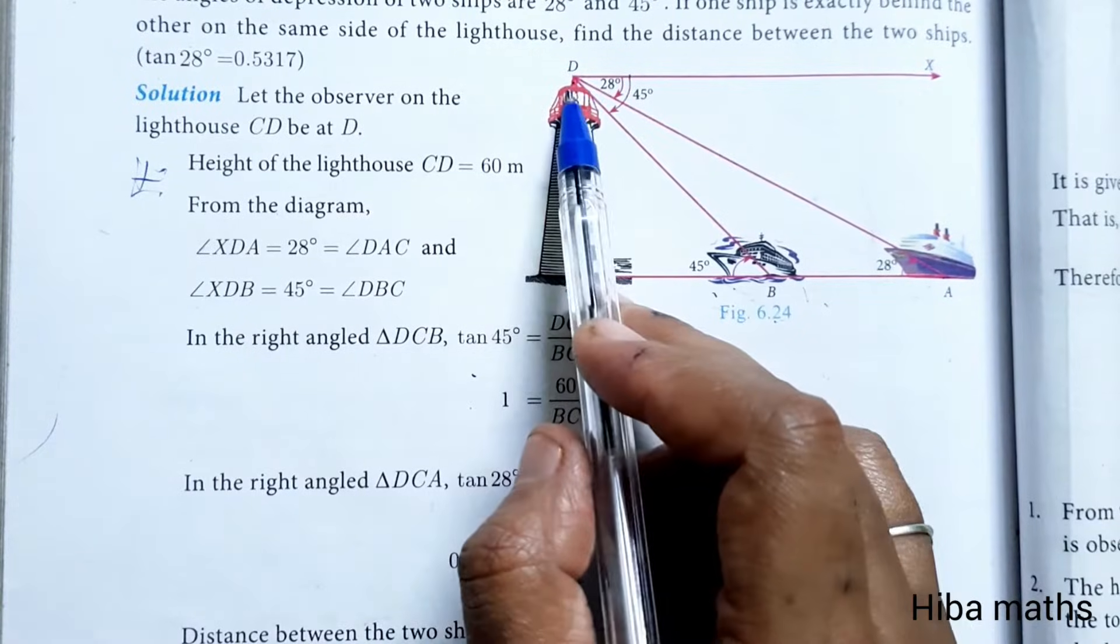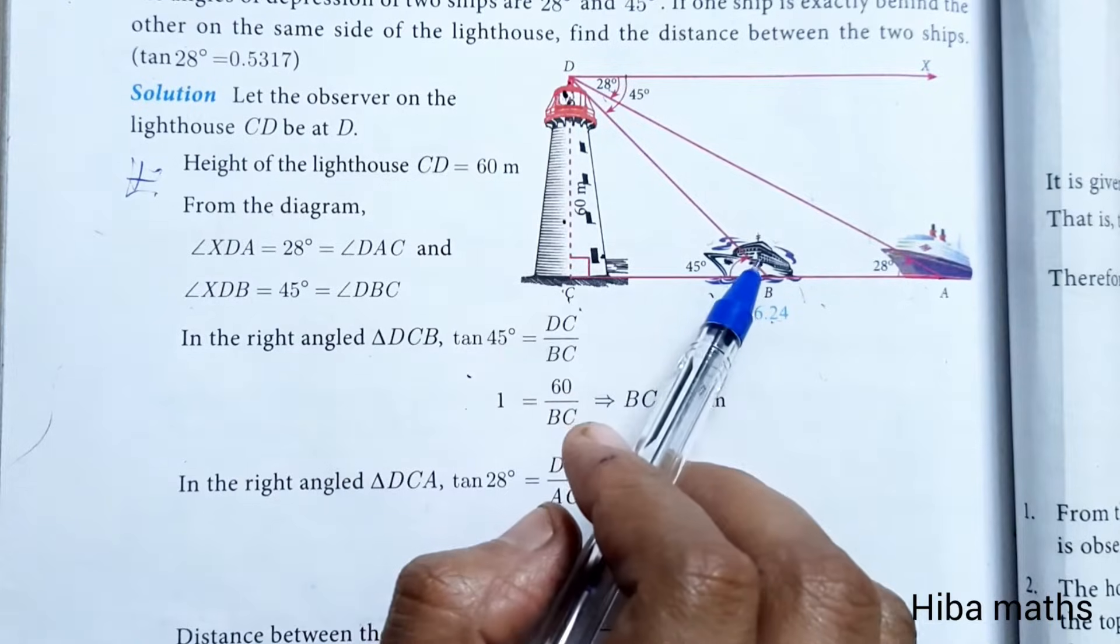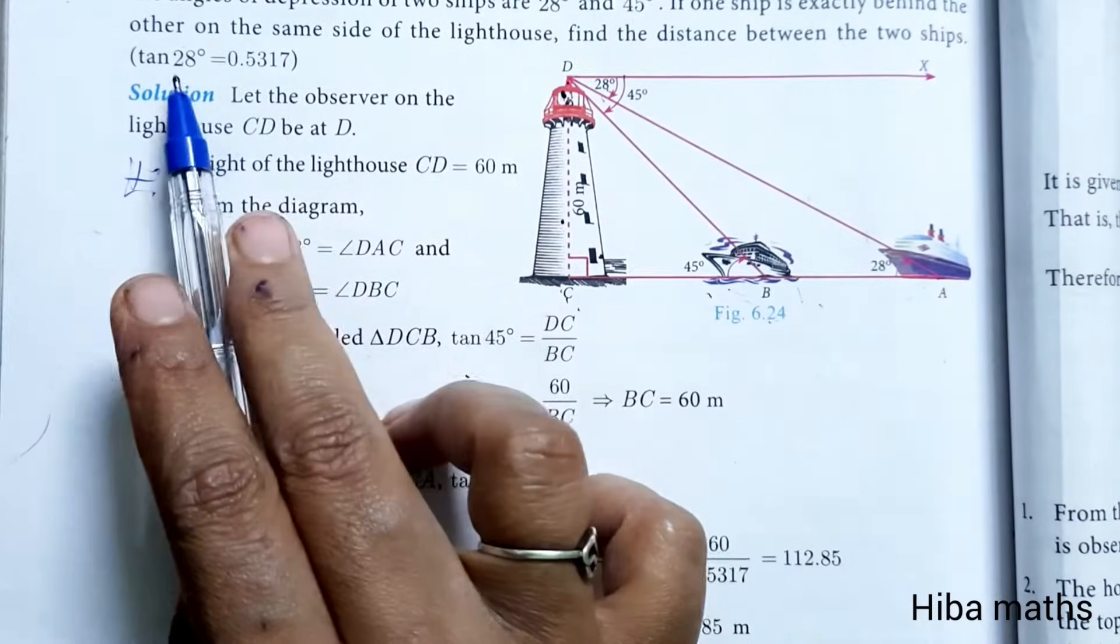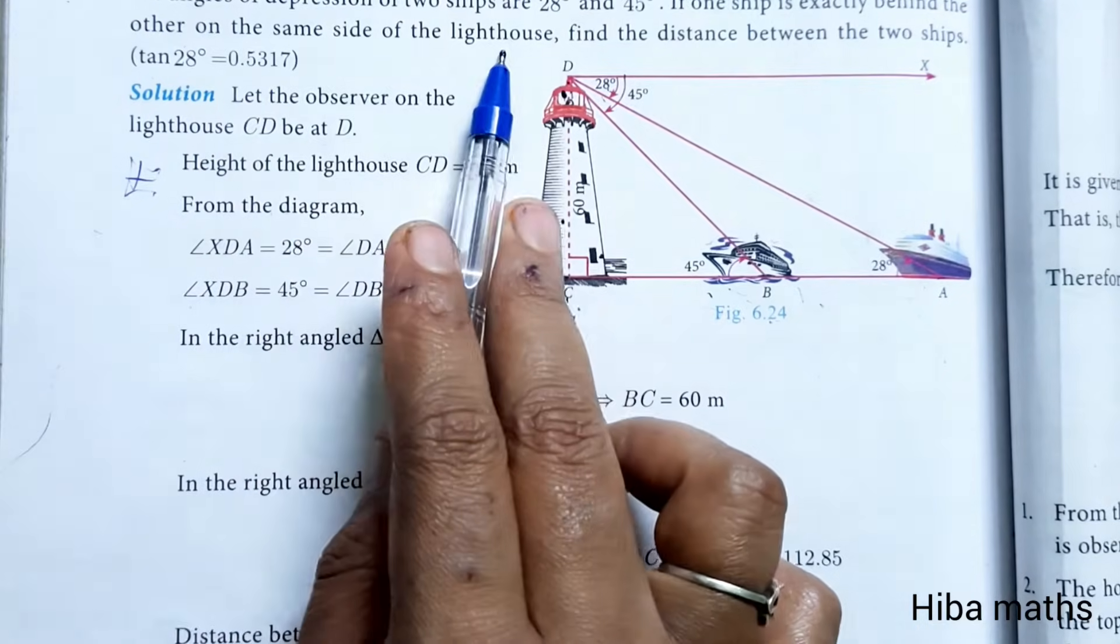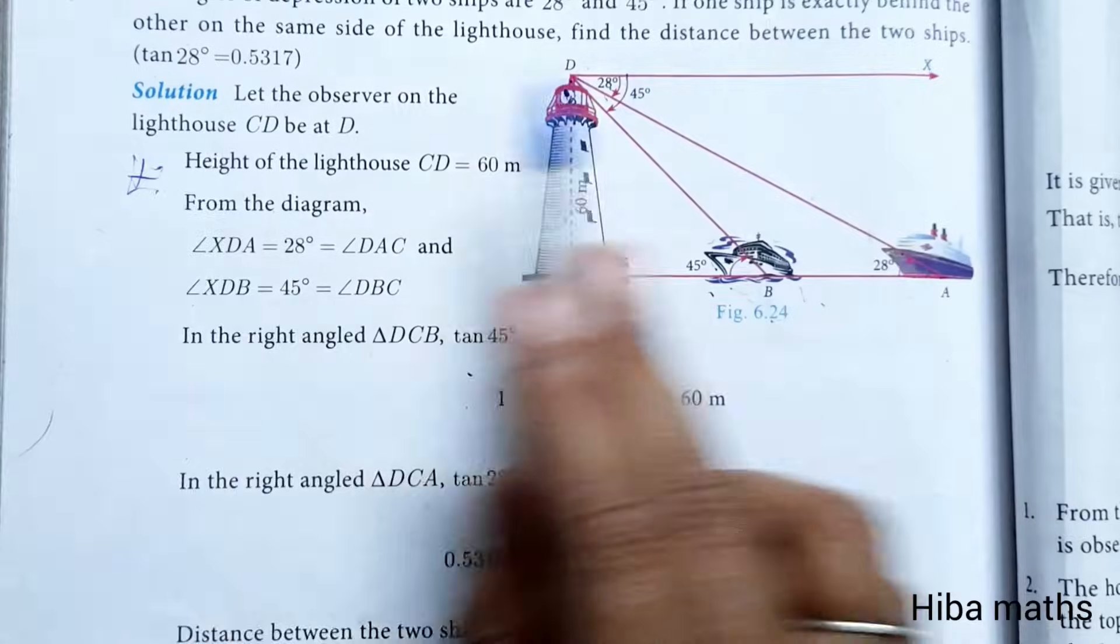One tower is there. Two ships come. One ship is there, one ship is 45 degrees. If one ship is exactly behind the other on the same side of the lighthouse, find the distance between the two ships.